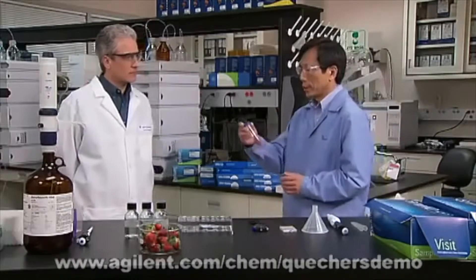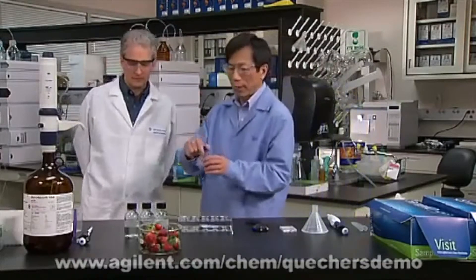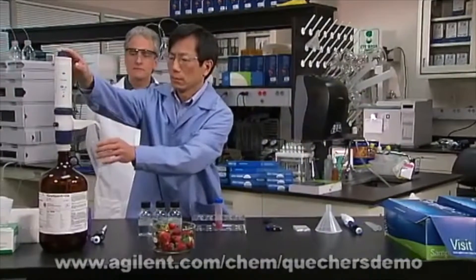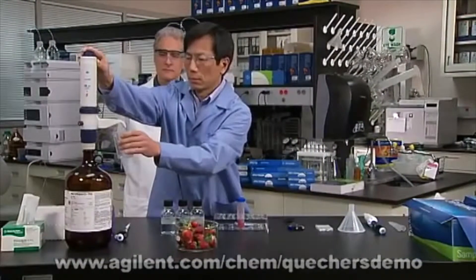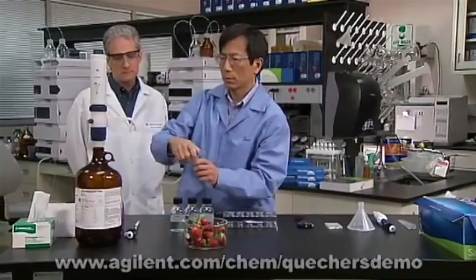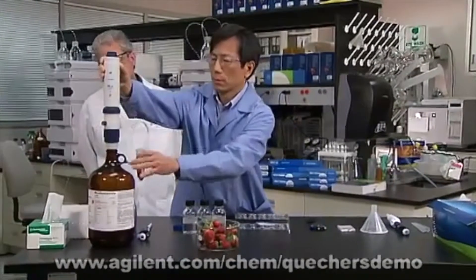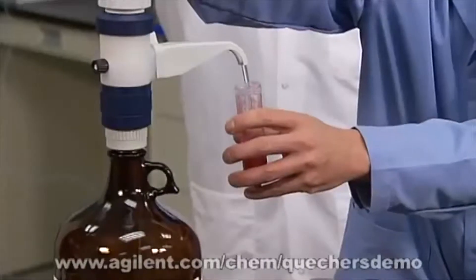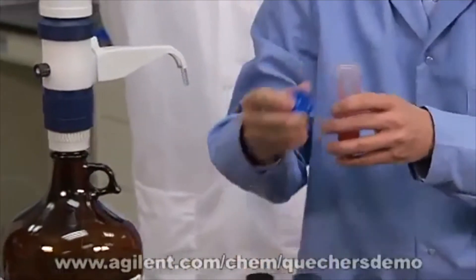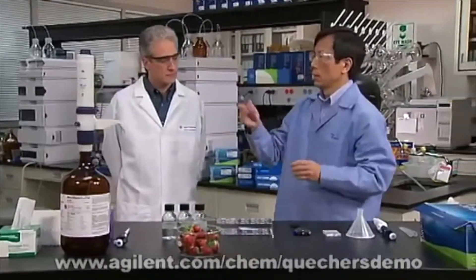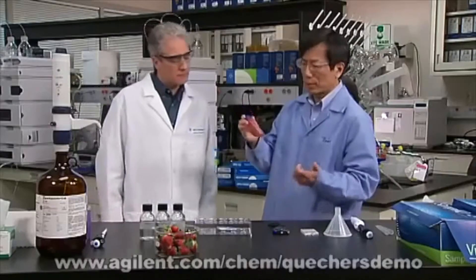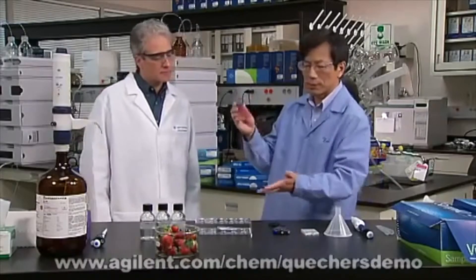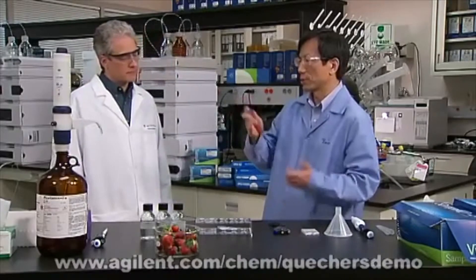Next, we do the extraction process. First, we take our 50 ml tube. We're going to add acetonitrile, and shake the tube for 30 seconds. Of course, you can do multiple samples. You don't have to do one at a time. You can fill it up with three or four samples and shake them at the same time.